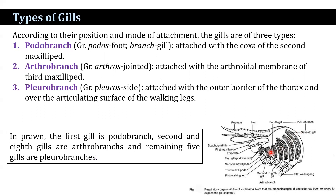According to their position and mode of attachment, the gills are of three types: Podobranch, Arthrobranch, and Pleurobranch. Podobranch comes from 'podos' meaning foot and 'branc' meaning gill — they are attached to the coxa of the second maxillipeds. Arthrobranch — 'arthros' means jointed — they are attached to the arthroidal membrane of the maxillipeds. Pleurobranch — 'pleura' means sides — they are attached to the outer border of the thorax and cover the articulating surface of the walking legs. The first gill is Podobranch; the second and eighth gills (the eighth being hidden by the second) are Arthrobranch; and the remaining five gills are Pleurobranch.